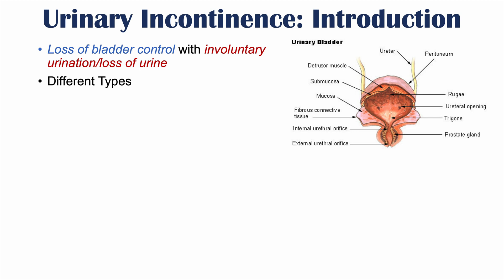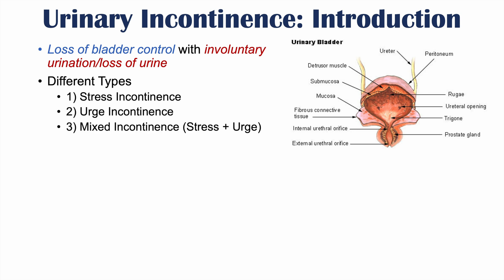There are different types of urinary incontinence. One type is known as stress incontinence, another is urge incontinence, and another is mixed incontinence, which is a mixture of both stress and urge incontinence. The fourth type is overflow incontinence and a fifth type is known as functional incontinence. We're going to talk about each of these in more detail, including some of the risk factors.